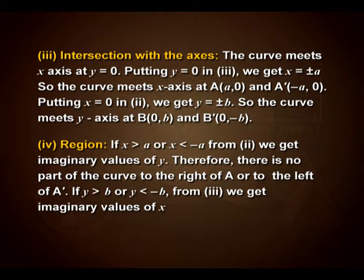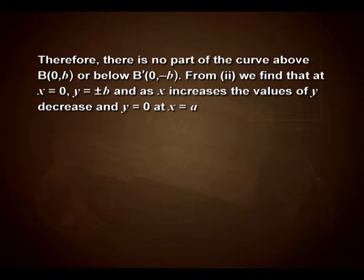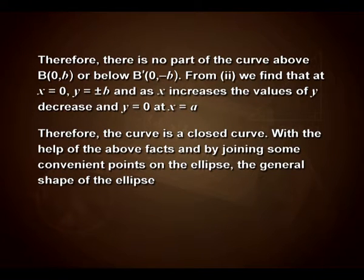For the region: if x > a or x < −a, equation 2 gives imaginary values of y, so there is no part of the curve to the right of A or to the left of A'. If y > b or y < −b, equation 3 gives imaginary values of x, so there is no part of the curve above B(0, b) or below B'(0, −b). From equation 2, at x = 0 y = ±b, and as x increases the values of y decrease until y = 0 at x = a. Therefore the curve is a closed curve.